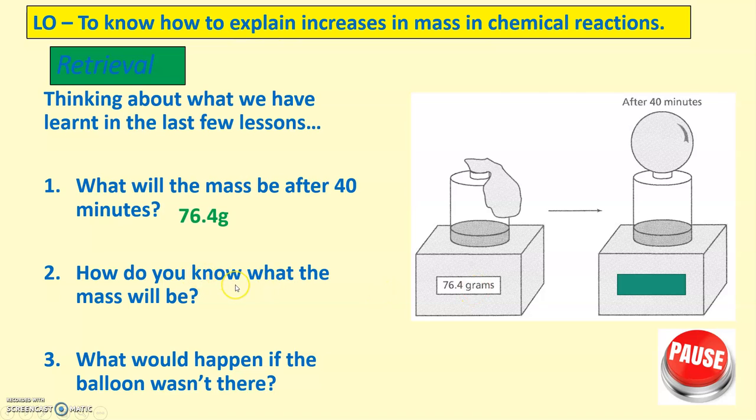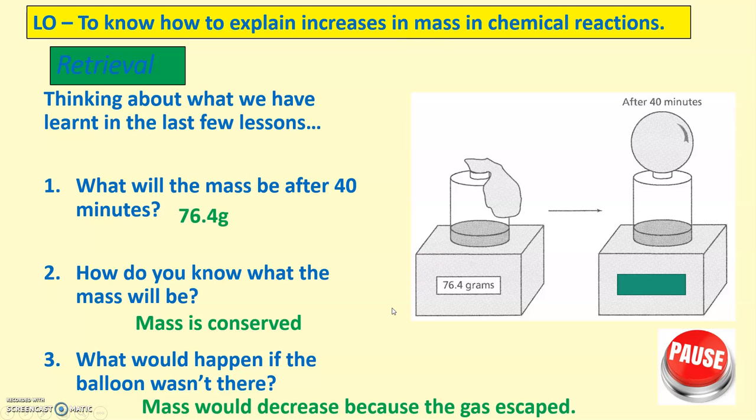Question two, how do you know what the mass will be? Simply, because mass is conserved, mass is conserved. Remember, mass is never created or destroyed, it is only just rearranged. And question three, what would happen if the balloon wasn't there? If the balloon wasn't there, the gas would be allowed to escape, and that means even though the mass is conserved, it would not be able to be measured, so mass would decrease because the gas has escaped. It's been conserved, but it cannot be measured as a volume.